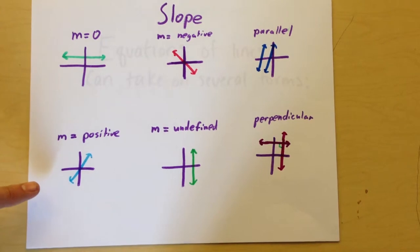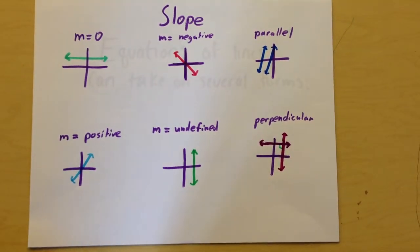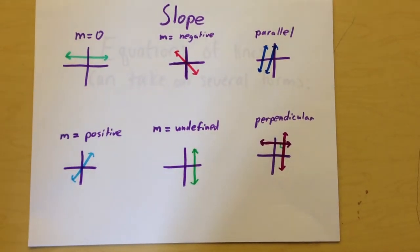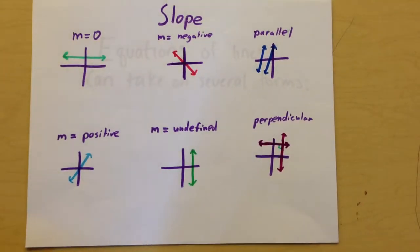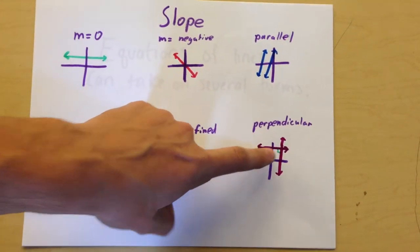Slope is positive if Y increases as X increases. Slope is undefined on vertical lines because you can't divide by zero, which is what a vertical line does in the equation for slope. And two slopes are perpendicular if their intersection forms a 90-degree angle or a right angle, as seen here.